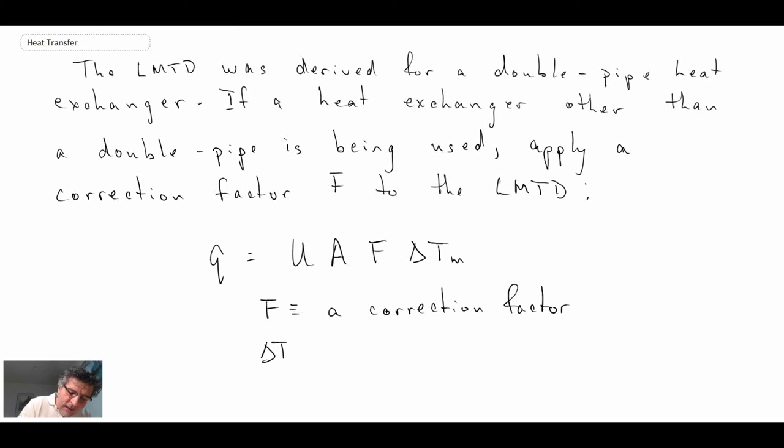And Delta T M is the log mean temperature difference for counter flow double pipe. So essentially what we're doing is mapping one to the other. Now where do you get F from?